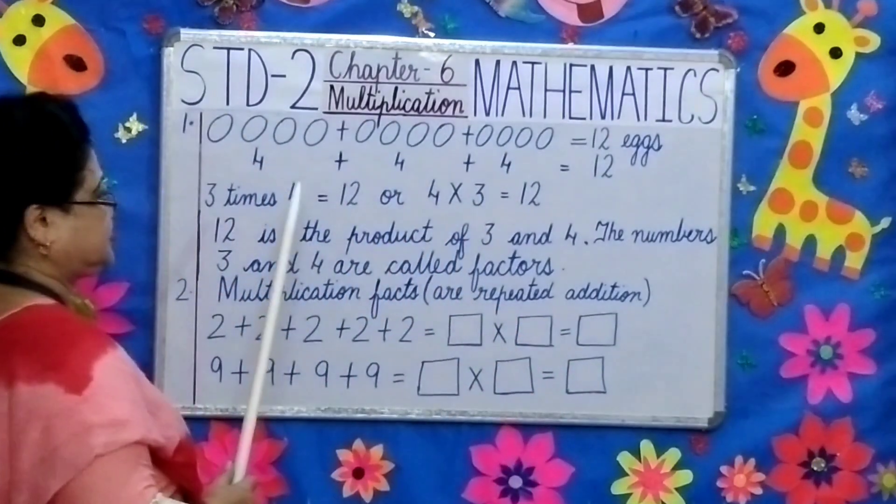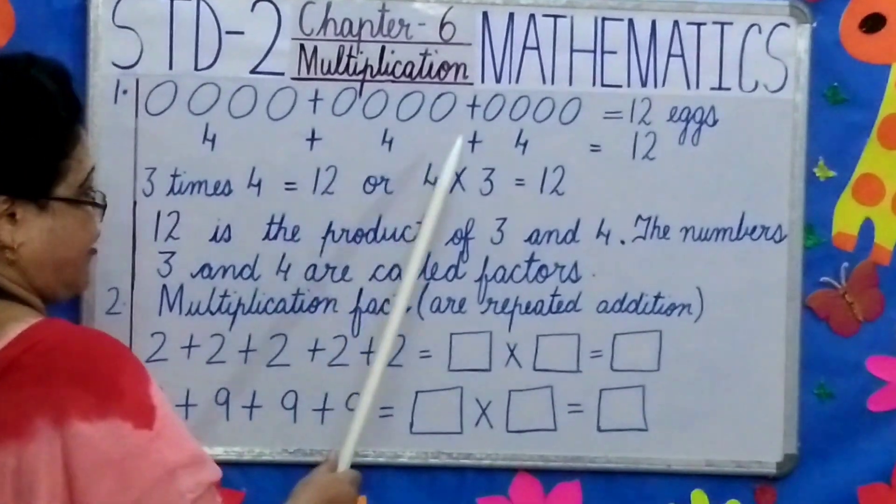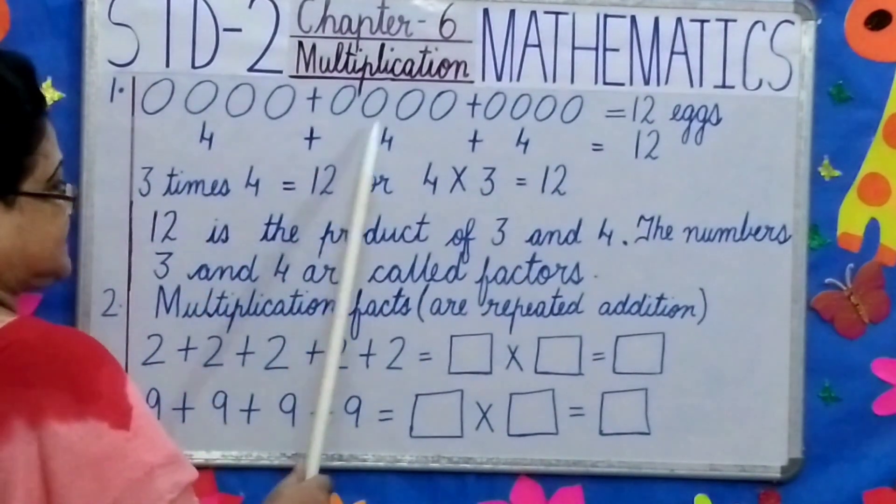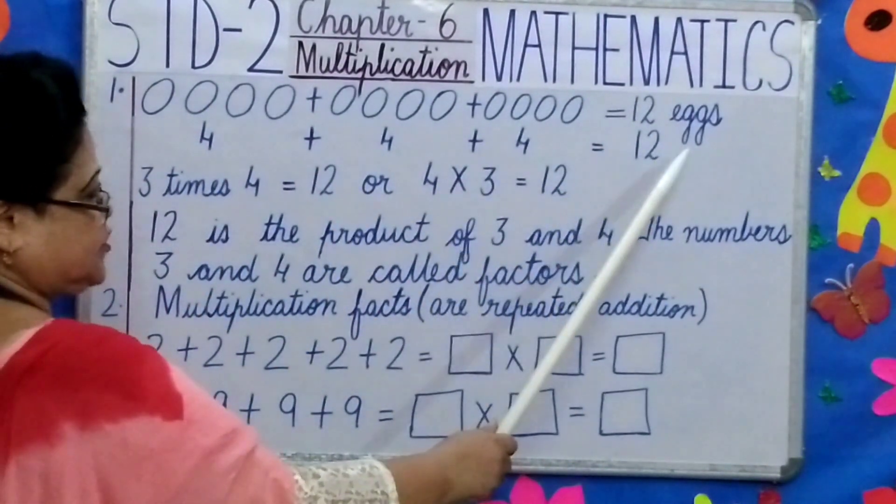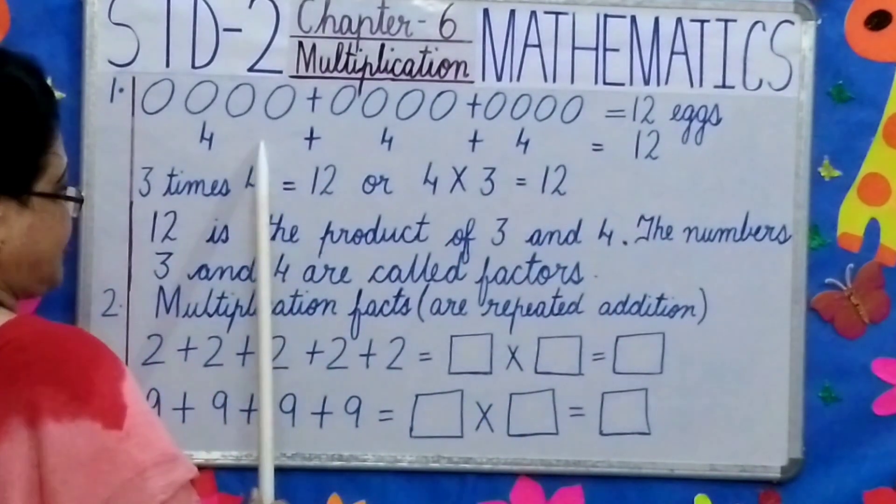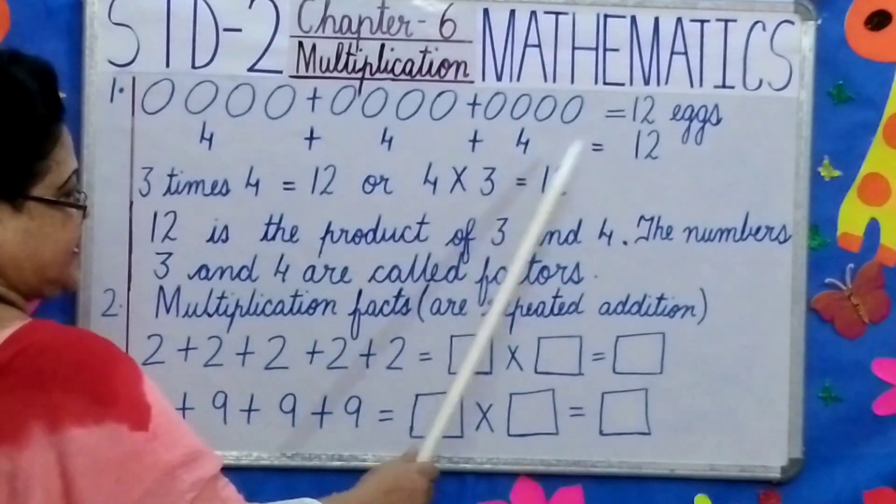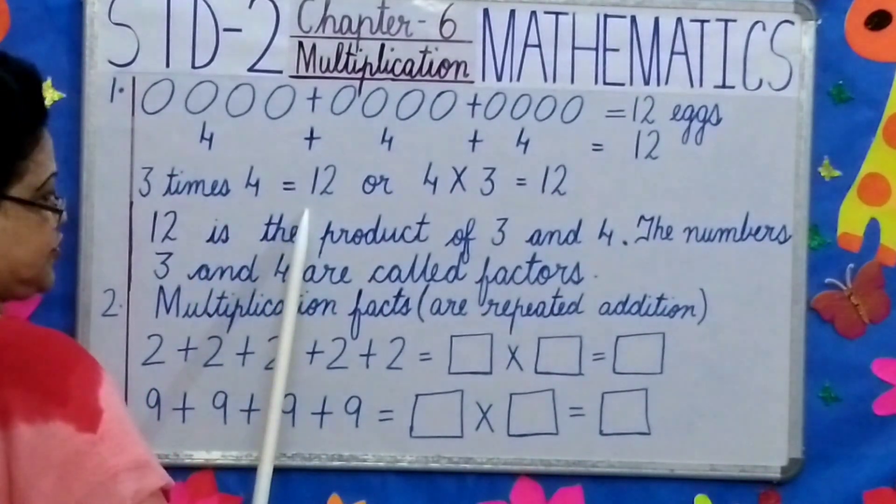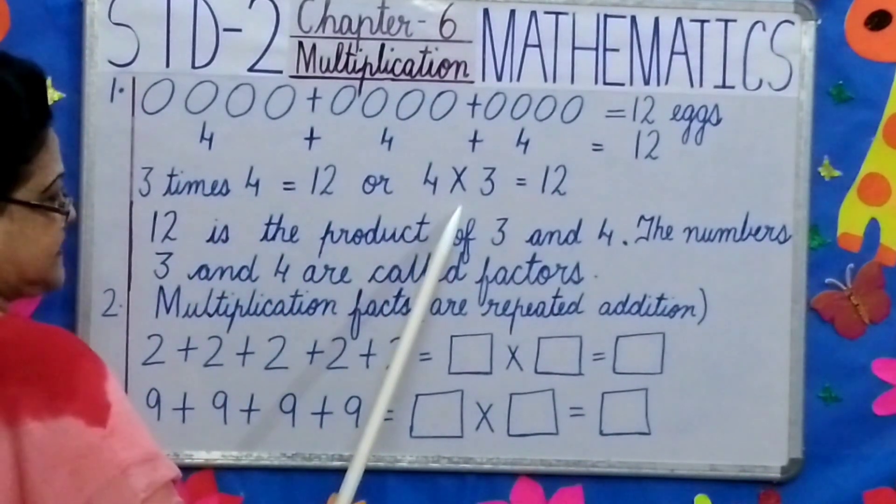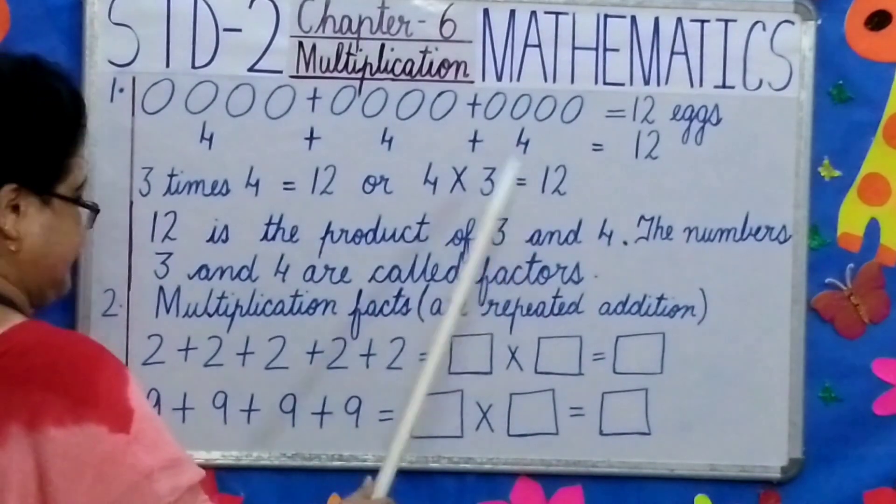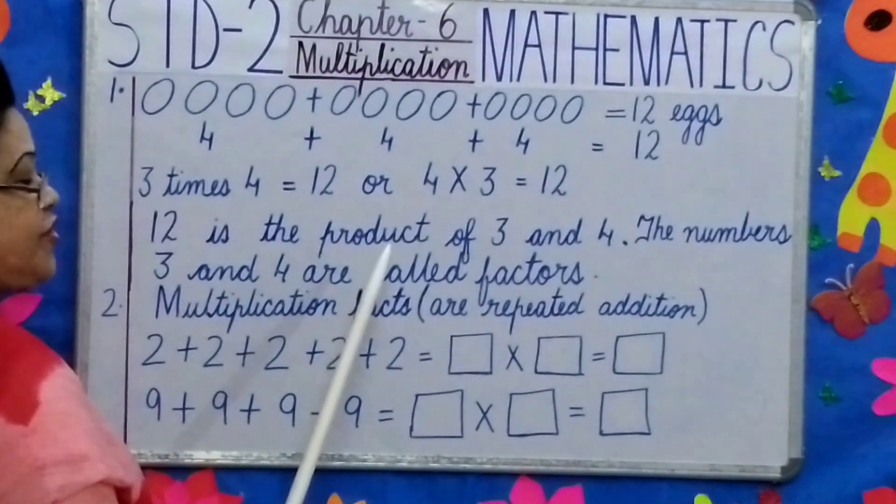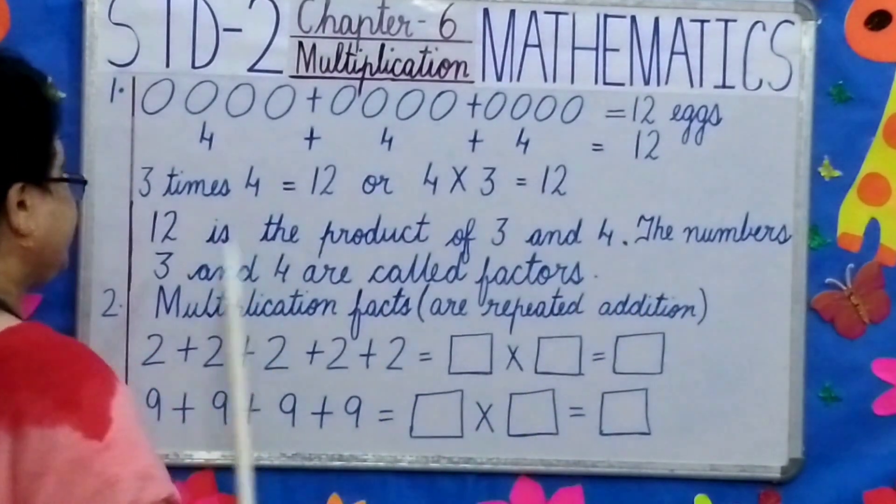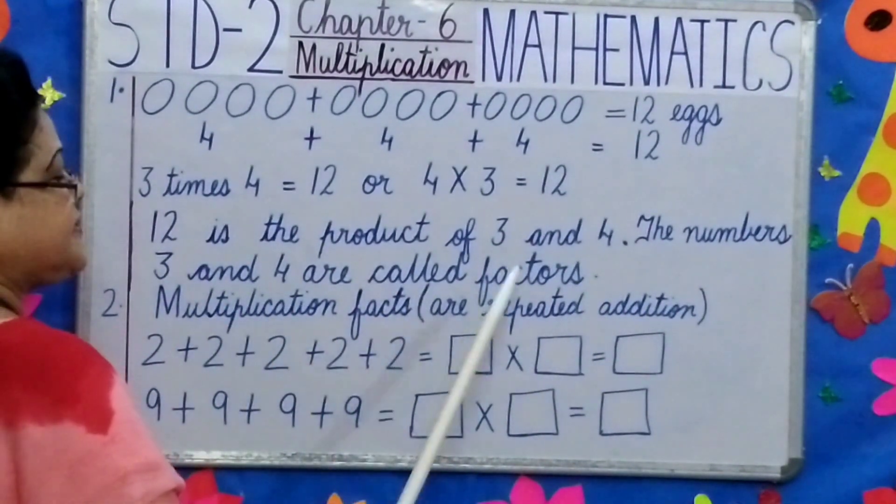The following picture shows 3 rows of 4 eggs each. 4 eggs plus 4 eggs plus 4 eggs equals 12 eggs. 4 plus 4 plus 4 equals 12. 3 times 4 equals 12 or 4 times 3 equals 12. 12 is the product of 3 and 4. The numbers 3 and 4 are called factors.